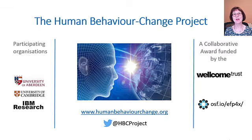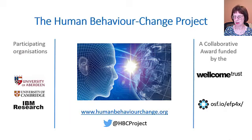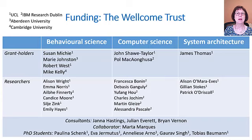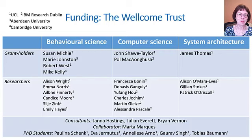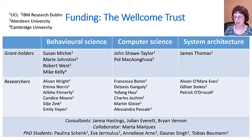And this is where the Human Behaviour Change Project comes in, which is a Wellcome-funded large collaboration between several universities and IBM Research. Here are the three main teams: the behavioural science team, the computer science team, and the system architecture team — the grant holders on the top row, the researchers on the second row. And then importantly, we have consultants, including our ontology consultant Dr. Jana Hastings, and I don't know what we would have done without her input.